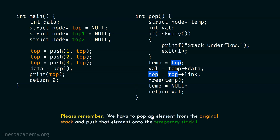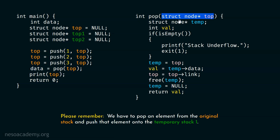We have to pop an element from the original stack and push it onto temporary stack 1. Therefore, it is important that we must pass the top pointer to this pop function so that we can pop an element from the original stack. We need a struct node star top pointer which is local to this function.